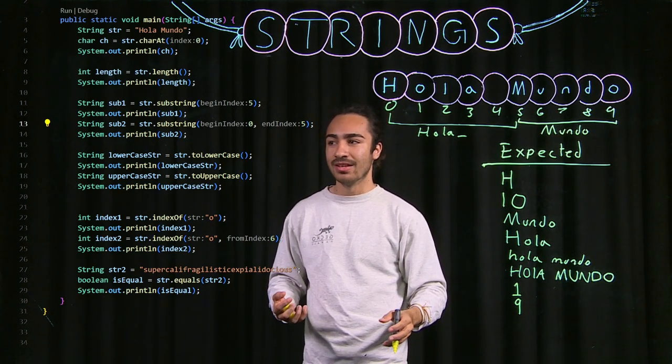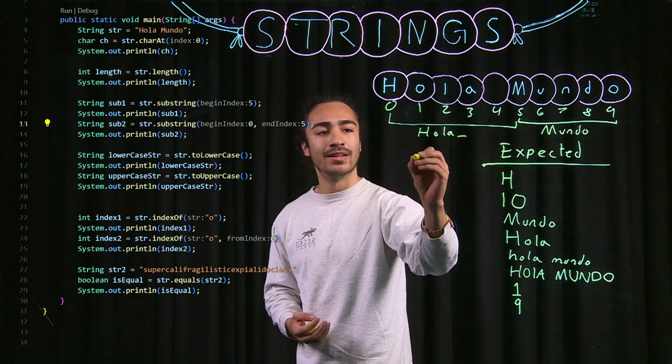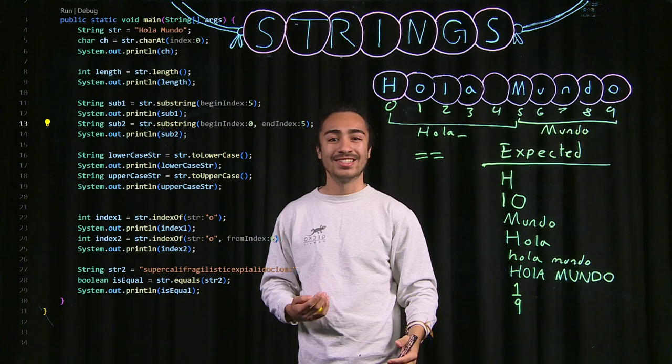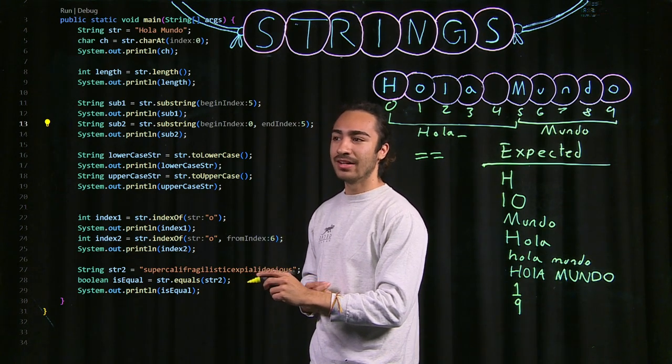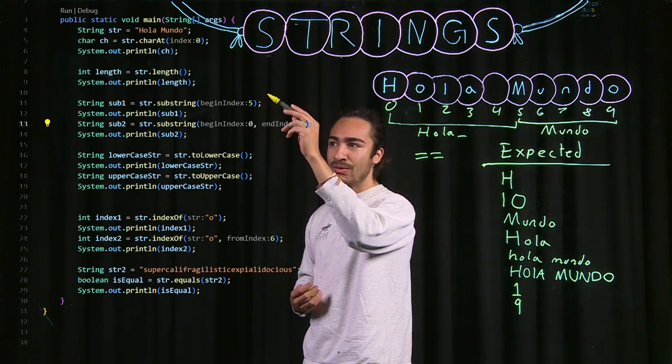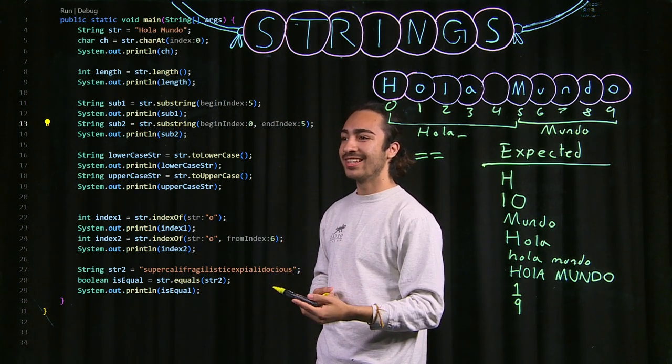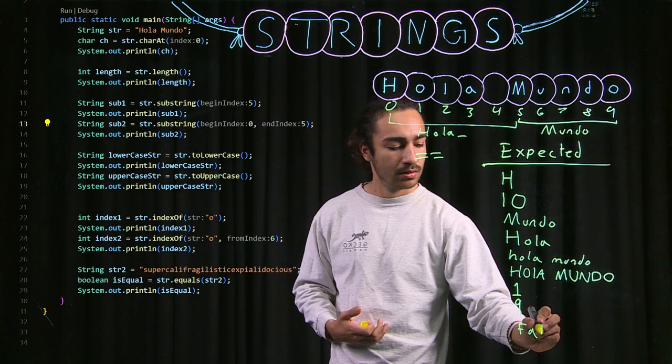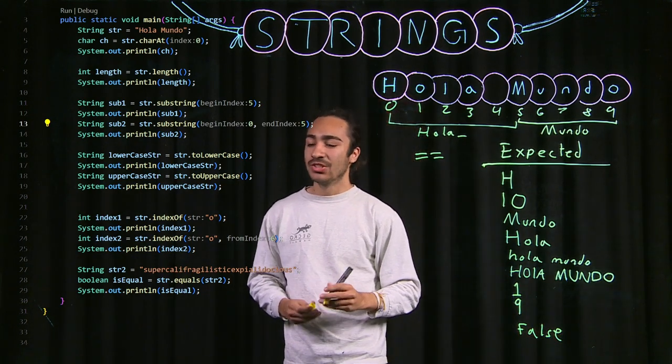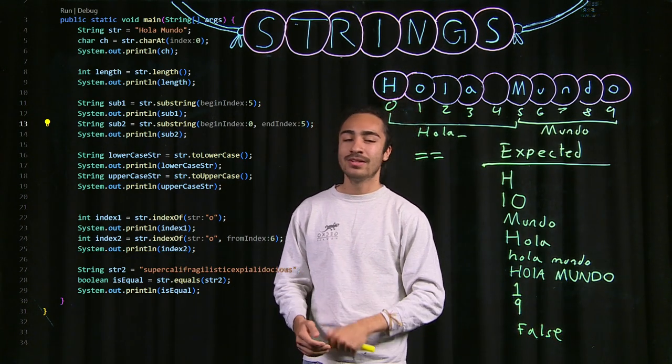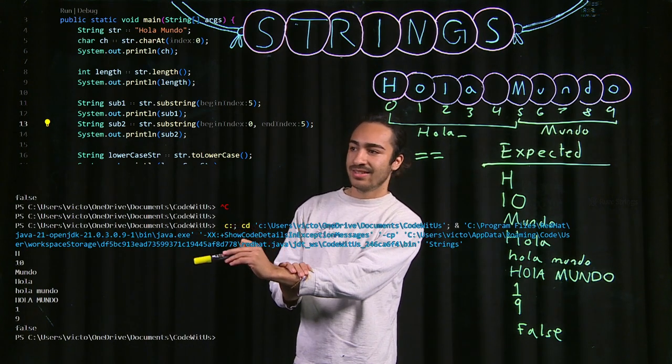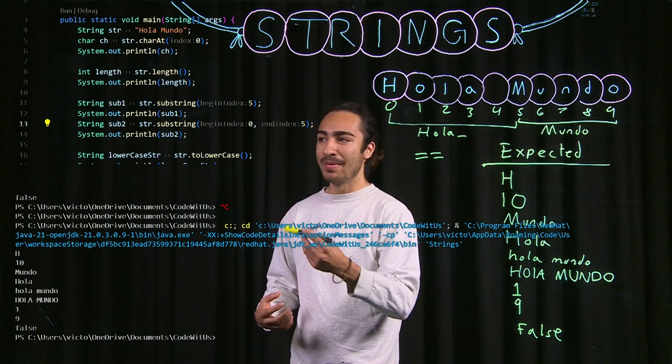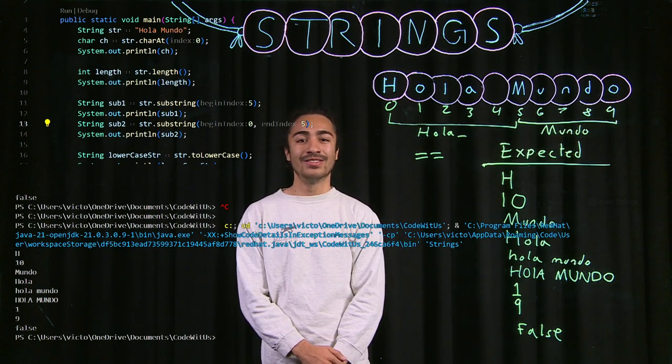Then finally, the equals method. We use this instead of the equals equals operator, because Java doesn't really compare strings the way they compare numbers. You have to use the dot equals. I have HolaMundo compared with supercalifragilisticexpialidocious, and those are completely different words. That should give us a false. Let's check if this expected output matches real world output. And this is exactly the same as what we got. I hope you learned how to manipulate strings and use them with methods as well. I'll see you in the next video.